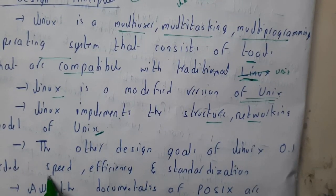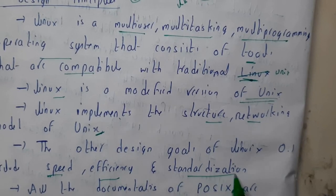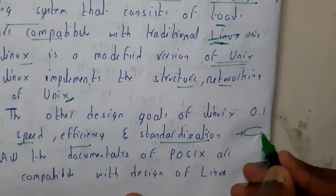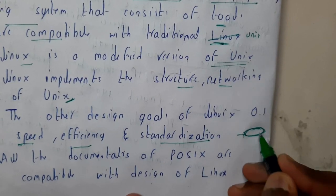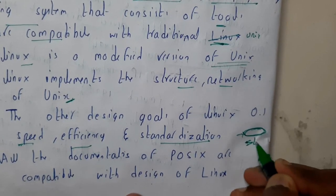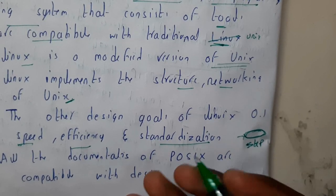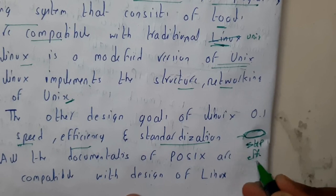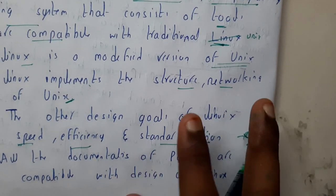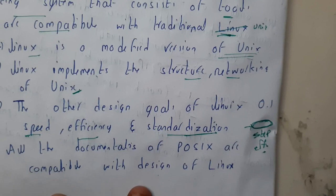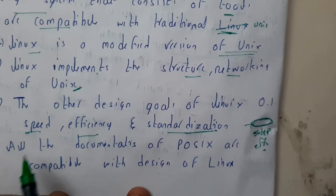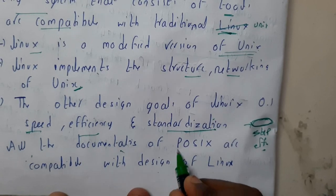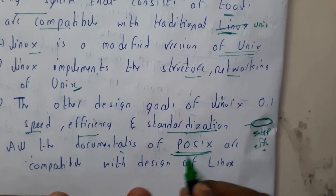The other designing goals of Linux are speed, efficiency, and standardization. Whenever any designer is trying to build his own OS, the main goals will be to make it faster than the present OSes and to have efficient usage of resources. Those are both important goals, and standardization is the third goal in the designing principles of Linux.